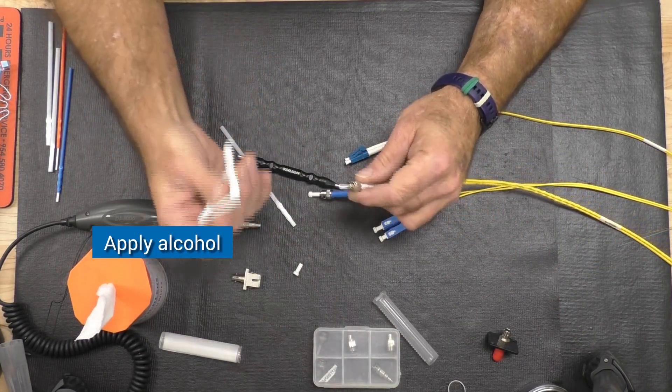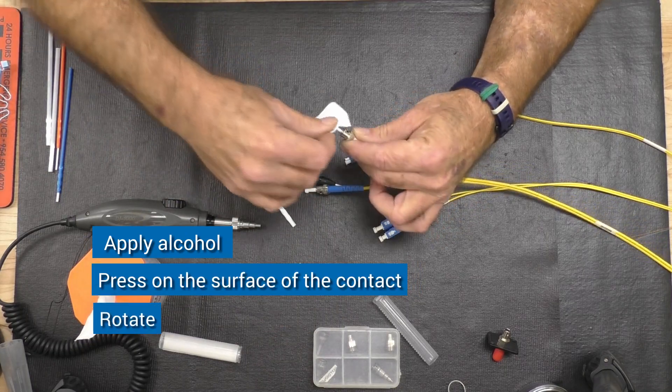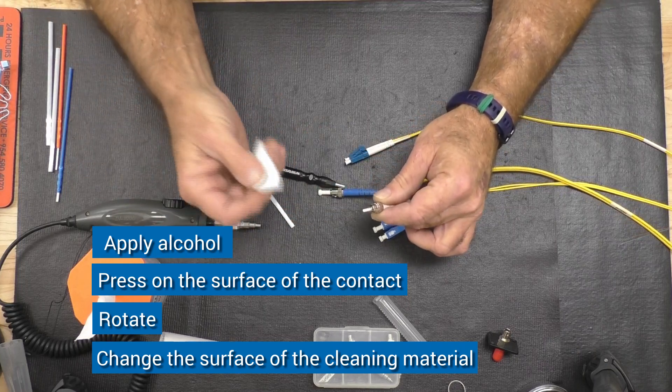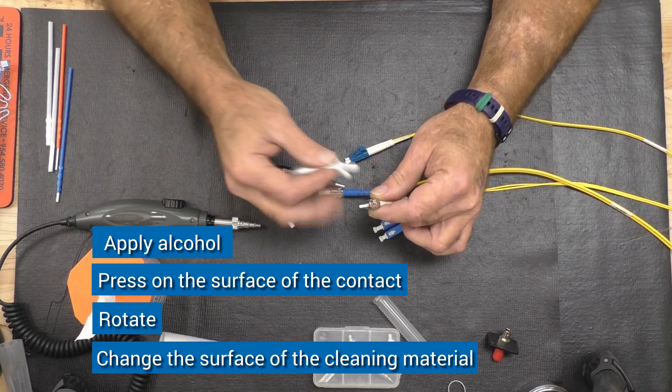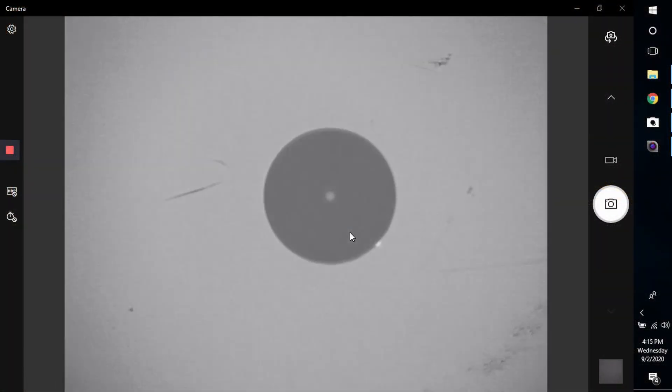Simply apply a little bit of alcohol, press on the surface of the contact, rotate, changing the surface of the cleaning material as you rotate to clean each tip. Next, you would visually inspect it. Video scopes are very handy—with the proper tip, a 2.5 millimeter, you simply insert it, focus, and you can look at it on a computer screen to visually inspect it.